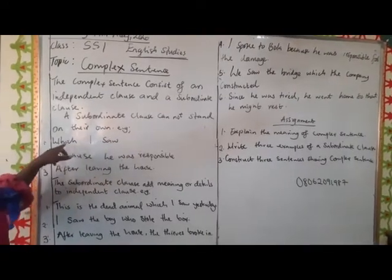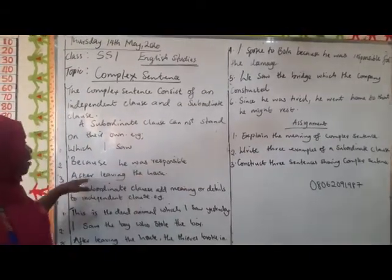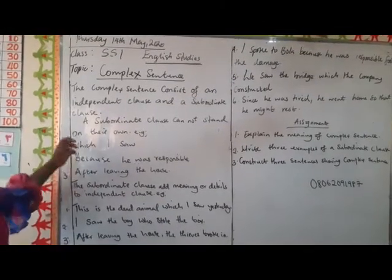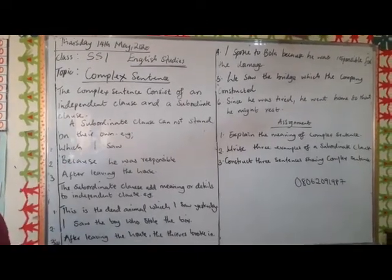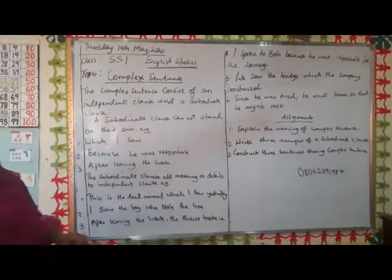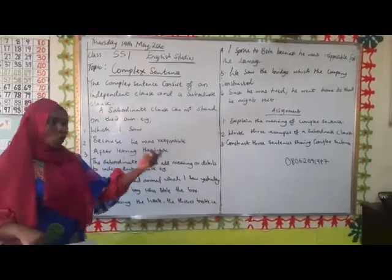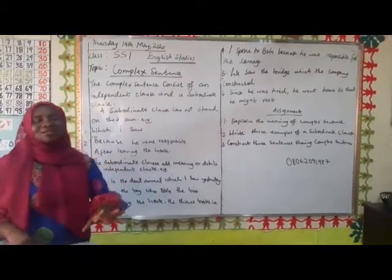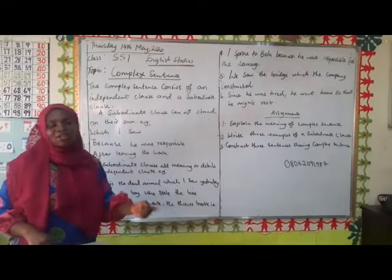'Which I saw' uses a relative pronoun; 'because it's us' uses a conjunction; 'because he was responsible' and 'after leaving the house' are further examples. You will see that all of these statements cannot stand on their own — they cannot express a complete thought because there is no main verb. The subordinate clause only adds details to what the independent clause is saying. The independent clause has the subject, the action, and the object. For a sentence to be independent, it must have a subject, a main verb, and an object — the doer and the receiver of the action.